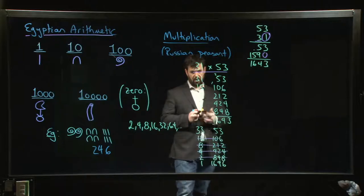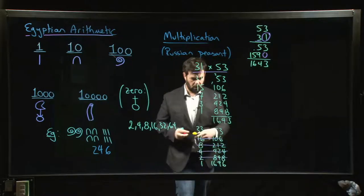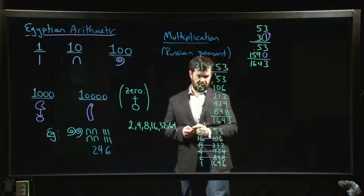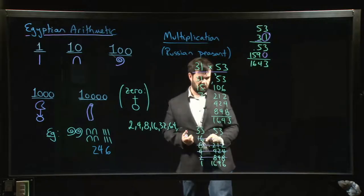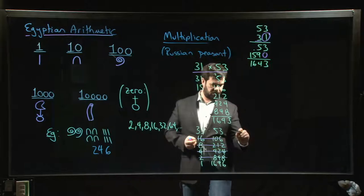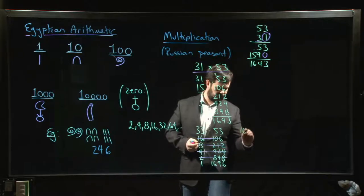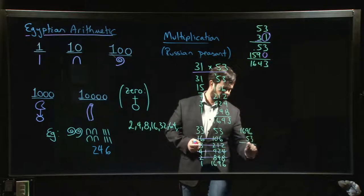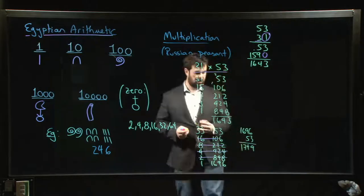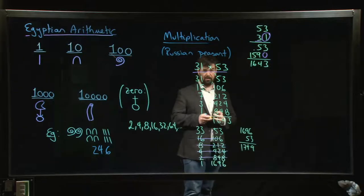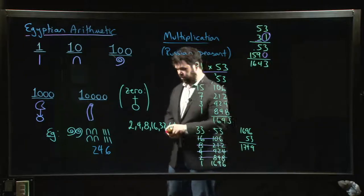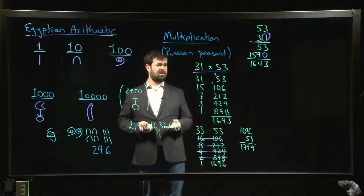There's a rule that shows up in this system which is that you throw away all the lines where the number was even. So we cross those out. There are two odd numbers left over, the 33 and the 1, and you only add up the numbers on the right-hand column that come from a row where there's an odd number on the left. So all we have to do is 1696 plus 53, we get 9, 4, 7, 1. So you get 1749 for the product.